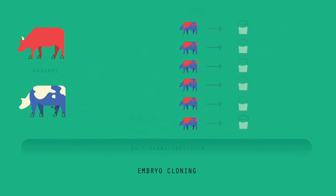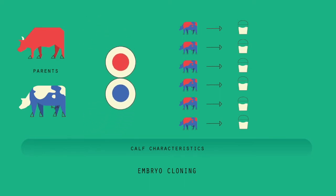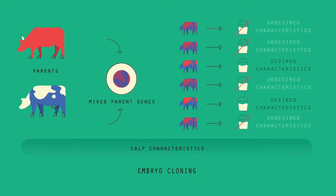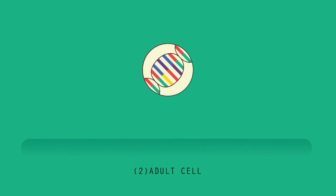Hopefully the calves will have the characteristics that the farmer desires, but as sexual reproduction is involved and the genes from both parents are randomly mixed, there is always the chance that they won't. There is a way to get around that problem, and that is to use another technique called adult cell cloning.